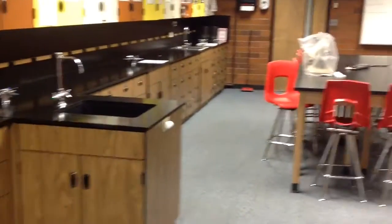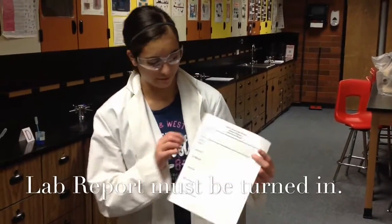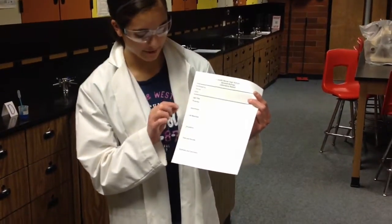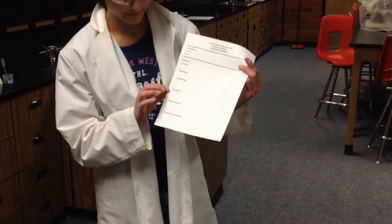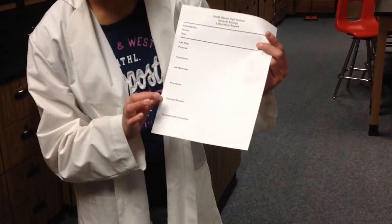After you're done with your experiment, fill out your laboratory report form. Include your name, period, date, lab title, purpose, hypothesis, lab materials, and procedure. Don't forget your data, results, and a summary and conclusion.